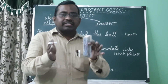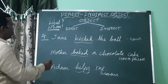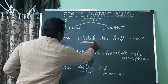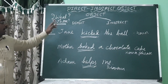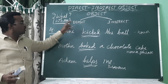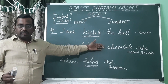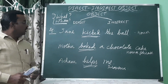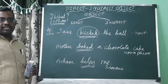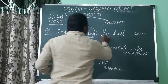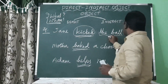How do you identify whether it is a direct object or indirect object? Just question the verb with 'what' and 'whom.' For example: what is kicked? The ball. So the ball is the direct object.